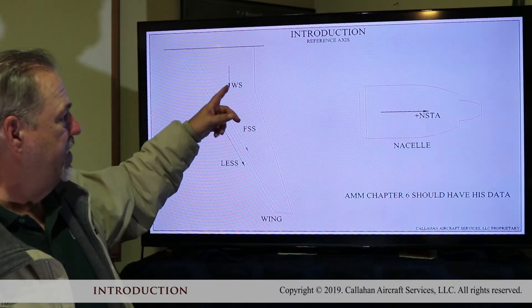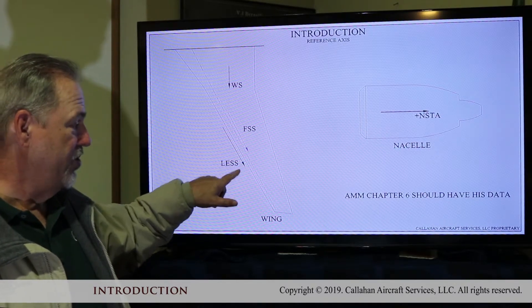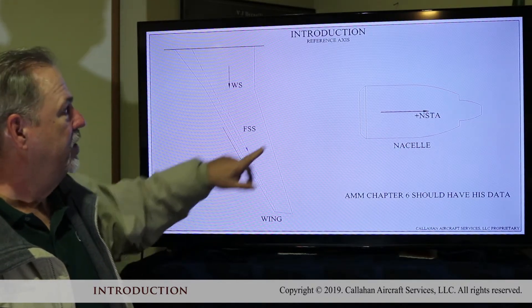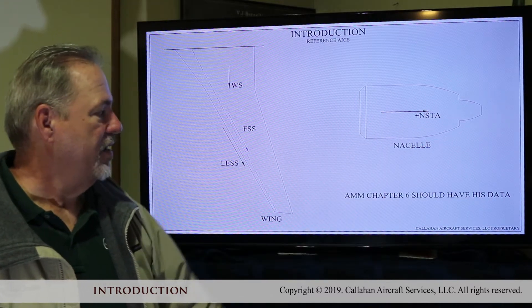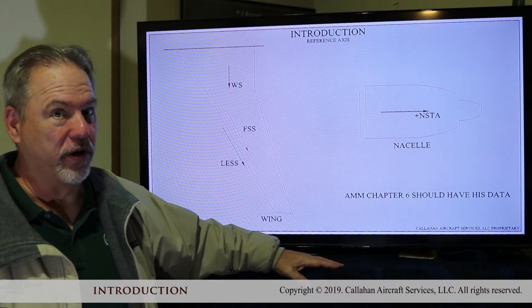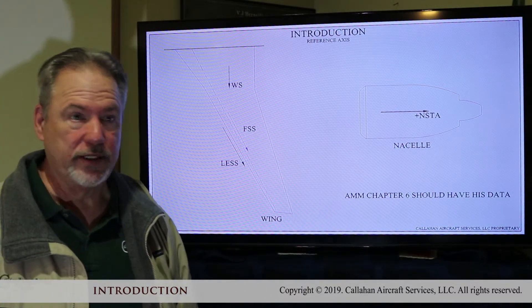Go to the wing. You have the wing station, front spar station, leading edge slat station, and over here we have the nacelle station. If you want more, oh, and there's more, lots more. Go to chapter six of the maintenance manual, or google it.